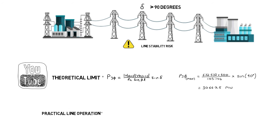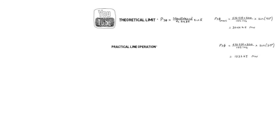Now let us check the practical line limit when the line is loaded to an angular displacement of 30 degrees. Practical power transfer is equal to 1533.25 megawatts.